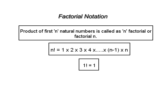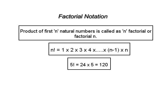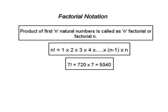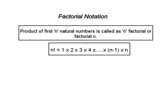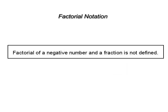Also, 1 factorial is 1, 2 factorial is 2, 3 factorial is 1 × 2 × 3 = 6, 4 factorial is 6 × 4 = 24, 5 factorial is 24 × 5 = 120, 6 factorial is 120 × 6 = 720, 7 factorial is 720 × 7 = 5040 and so on. n factorial equals (n−1) factorial × n. Clearly, factorial of a negative number is not defined and factorial of a fraction is not defined.